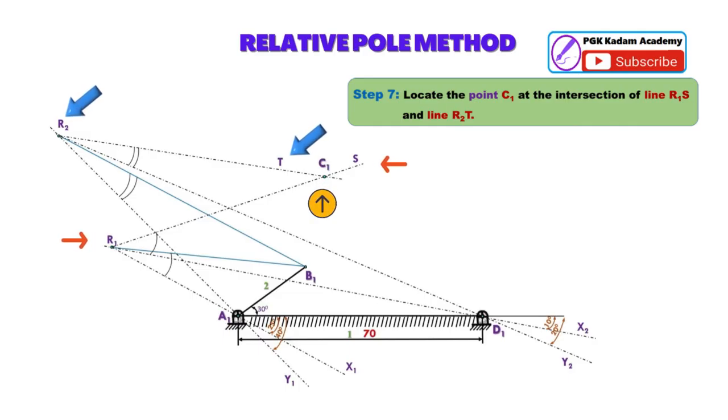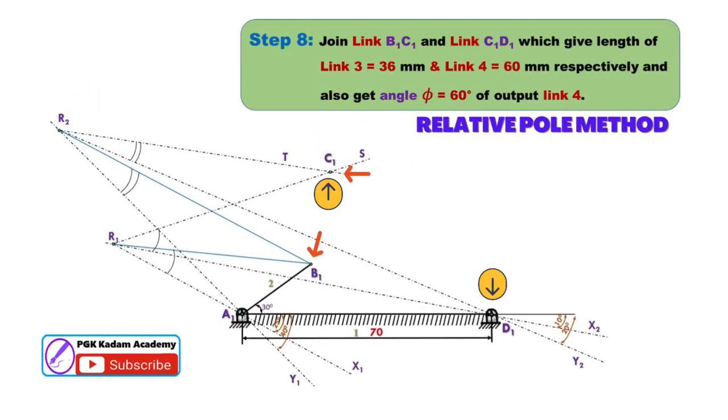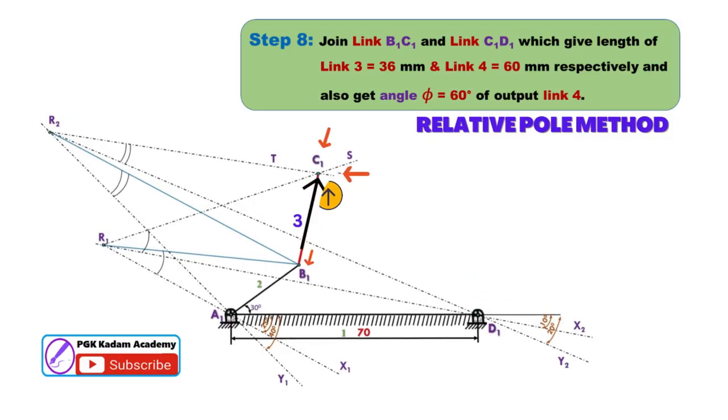Step 7: Locate the point C1 at the intersection of line R1S and line R2T.